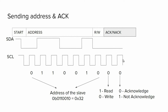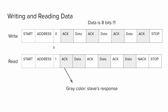If the acknowledge bit is one, it means not-acknowledge, meaning there is no device with that address connected to the I2C bus. For writing data, we have: start condition, address, then zero as the read/write bit. The slave acknowledges, and then the master can send data to the slave — one byte, or eight bits. After sending one byte, the slave acknowledges the master. The master can then send another byte or stop the transaction by sending a stop condition.